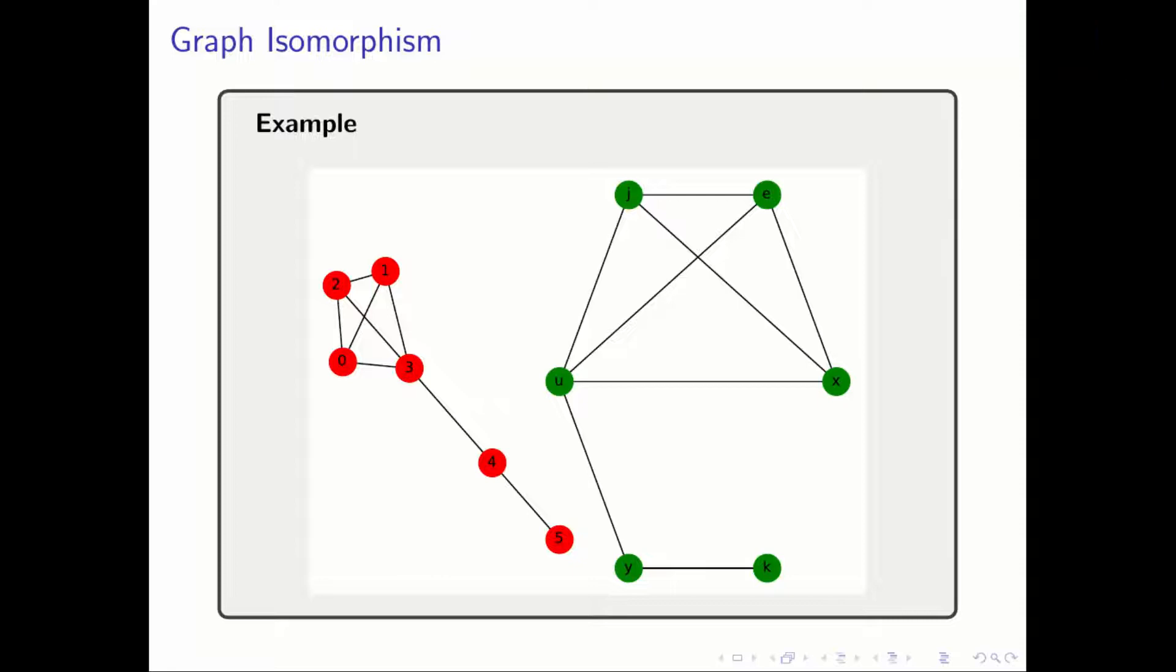Graph isomorphism is an interesting and challenging concept. Essentially it has to do with two graphs having an equivalent structure, even if the vertices are labeled or placed differently. The two graphs in the example here have similar structures, and yet they're labeled and drawn differently.